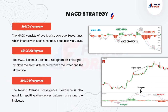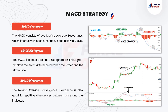MACD Divergence. The moving average convergence divergence is also good for spotting divergences between price and the indicator. If the price is increasing and the MACD is decreasing, then we have a bearish divergence, which indicates that the trend is likely to reverse. The same is in force but in the opposite direction for a bullish divergence pattern. If the price is decreasing and the MACD is increasing, then we have a bullish divergence. In this manner, we expect the bearish trend to switch to bullish activity.